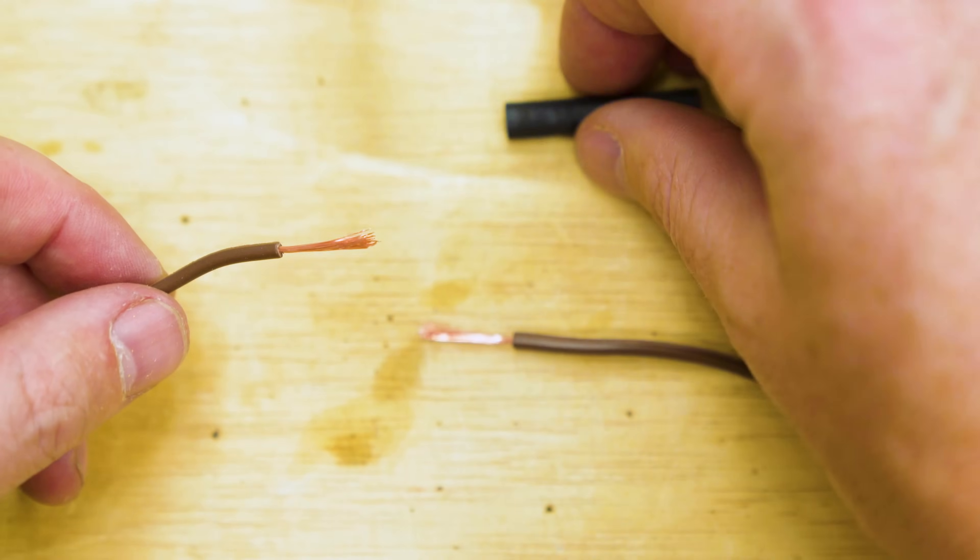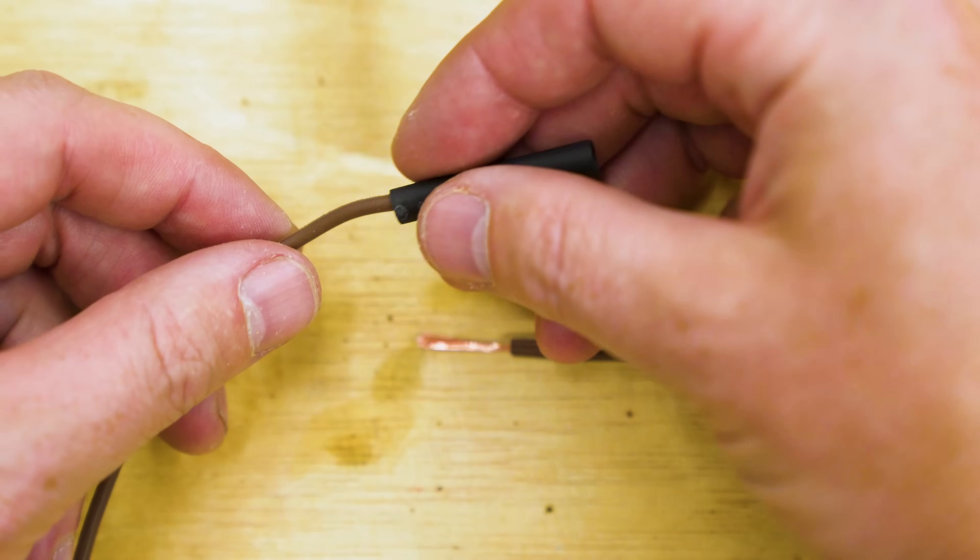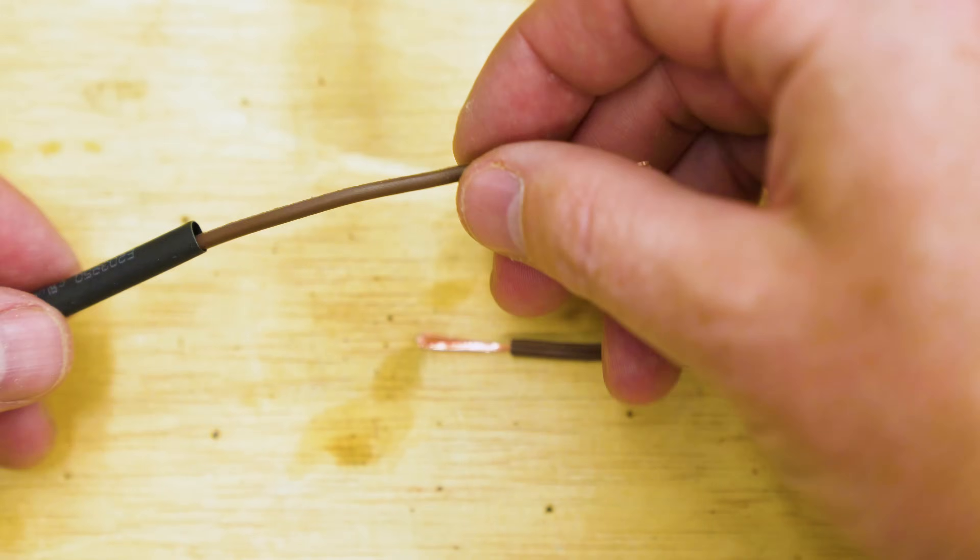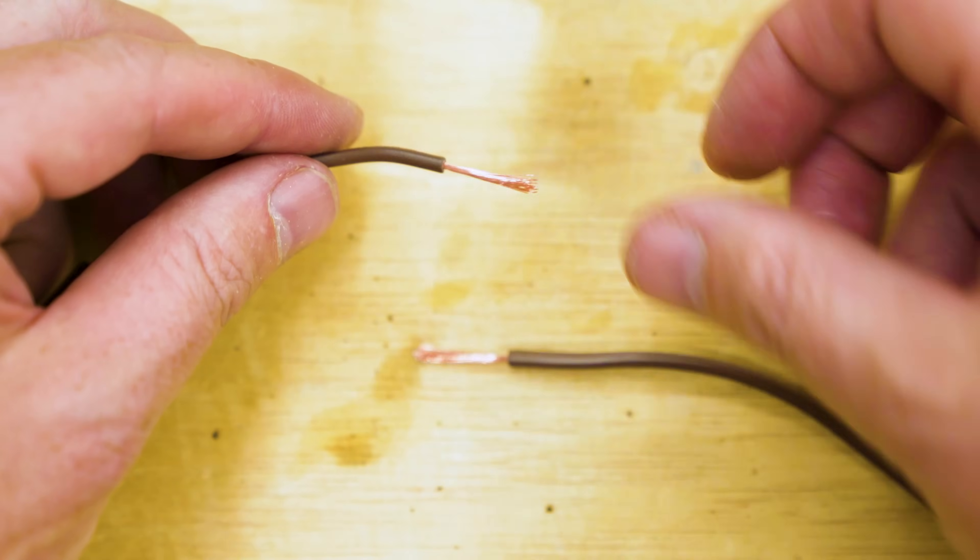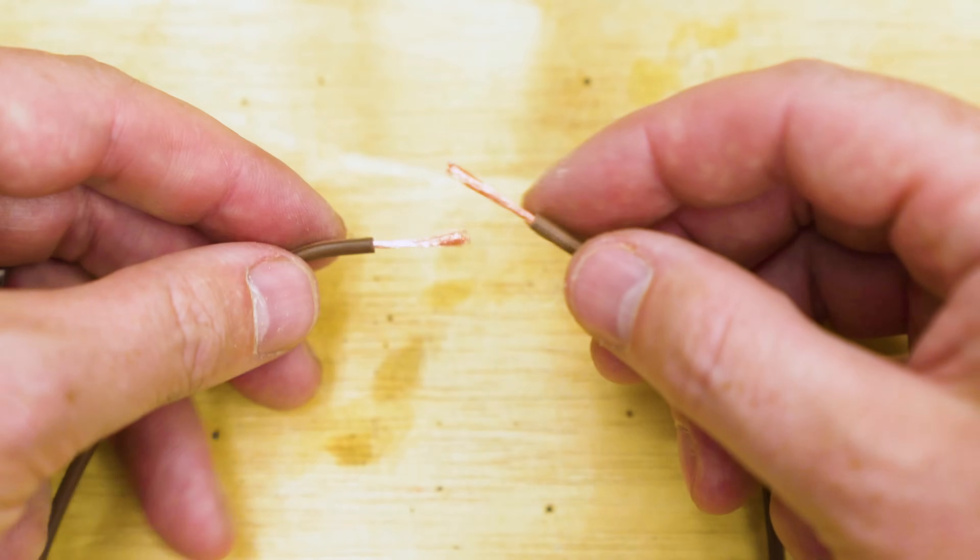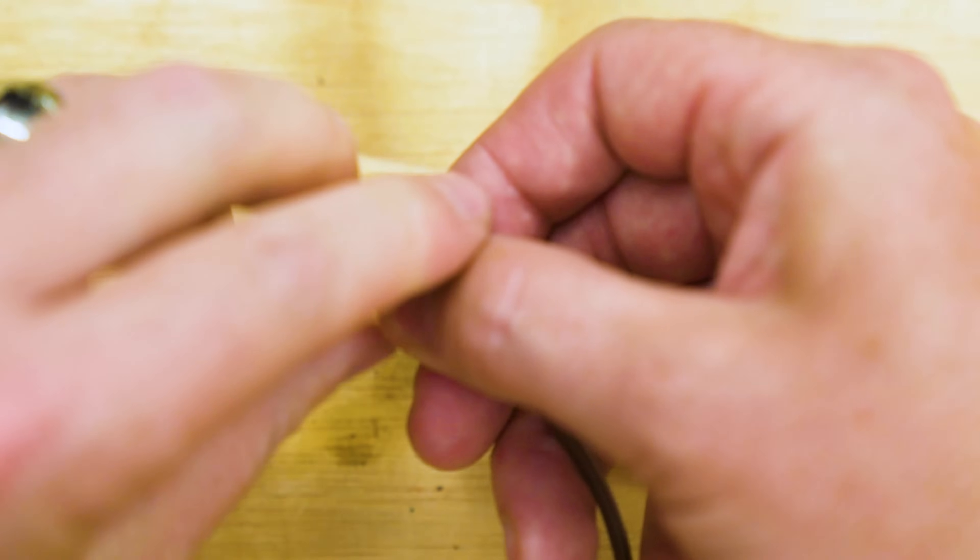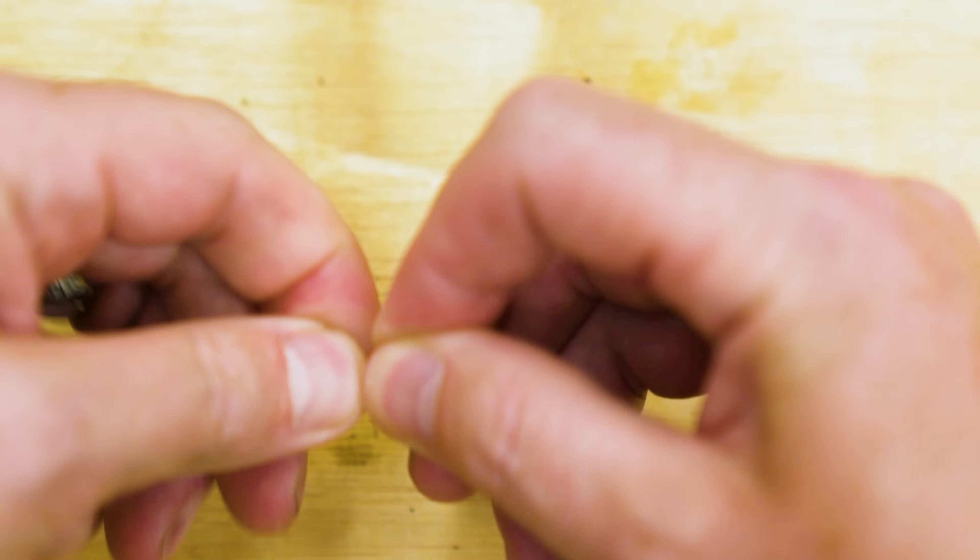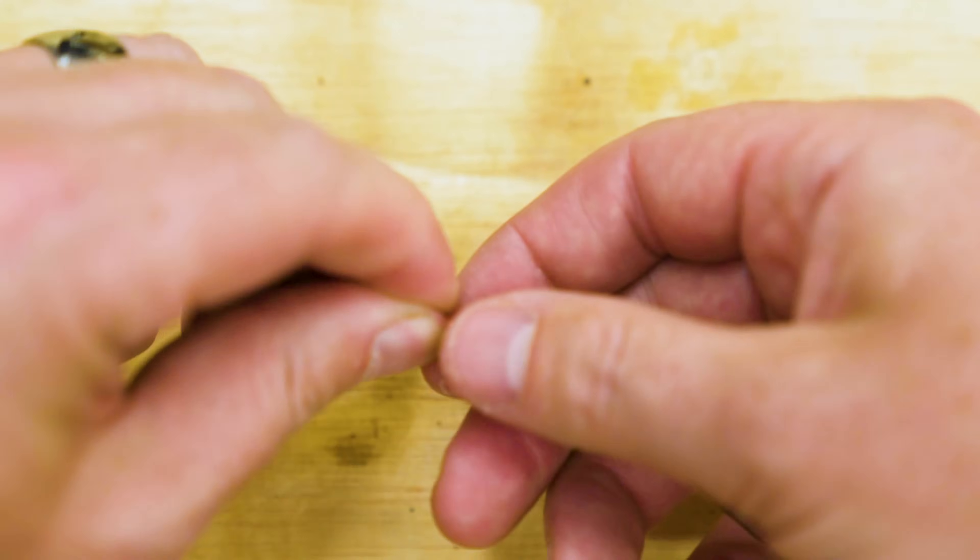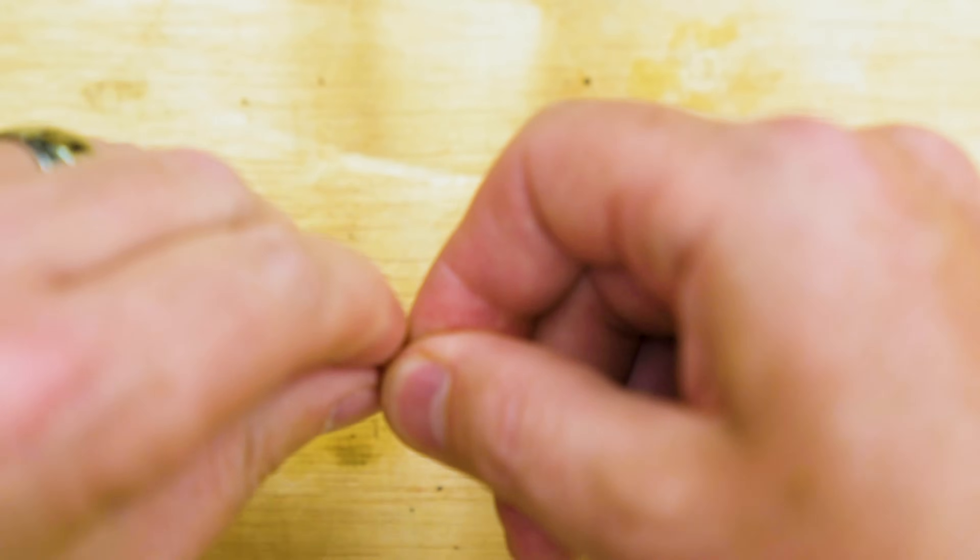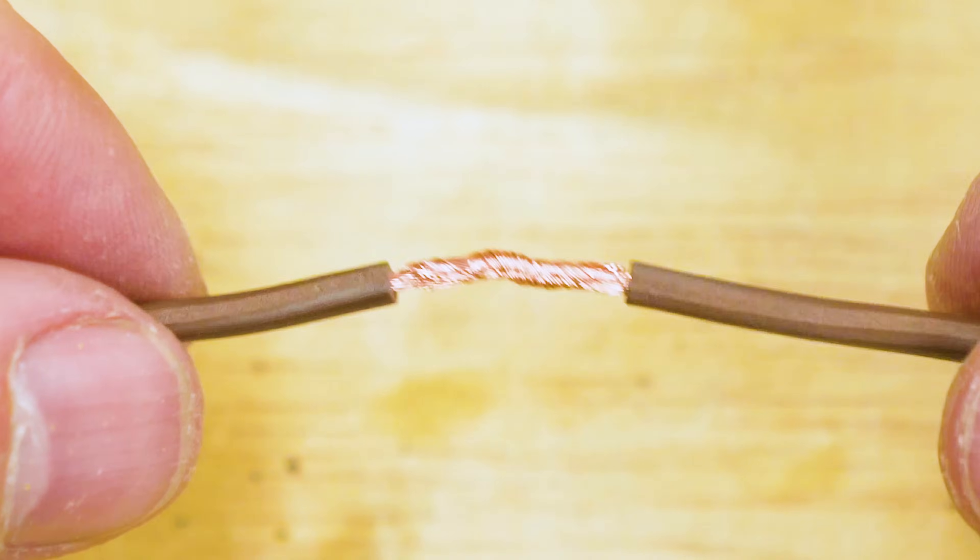Now to begin our soldering process, first we need to slide on our heat shrink tubing, and we're going to put that as far away as you can from the area that we're going to solder. Then we're going to connect the wires and you want to twist these together so that they're as tight as can be. And there's different schools of thought on what's best here, but for this demo, we're just going to do a simple twist and we're going to get it as tight as can be. So something like that should work great.